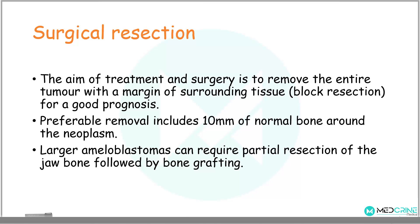When looking at surgical resection, the aim is to remove the entire tumor with a margin of surrounding tissue via a procedure known as block resection, which is associated with a good prognosis. Preferably, 10 mm of normal bone around the neoplasm is removed. Larger ameloblastomas require partial resection of the jaw bone followed by bone grafting.